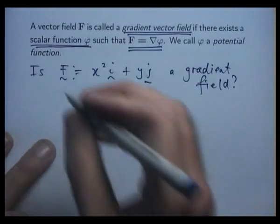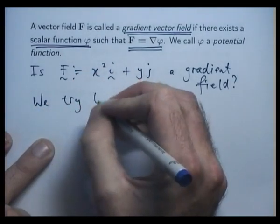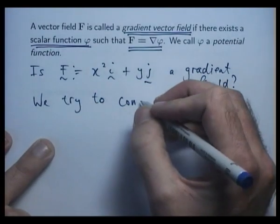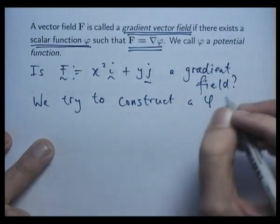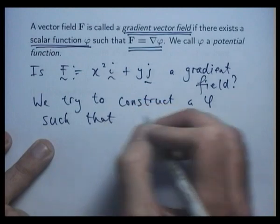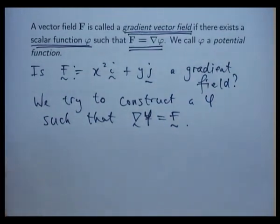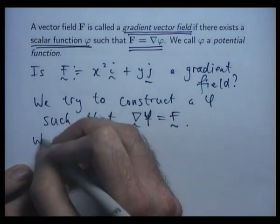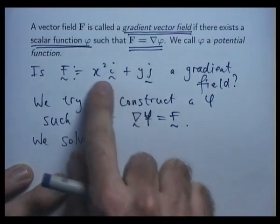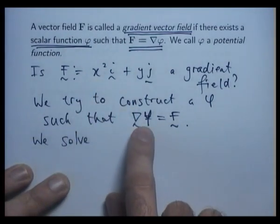So what we would like to do here is produce some scalar field phi such that grad phi equals the given vector field. We try to construct a function phi such that grad phi equals our vector field. So what we want to do here is solve d phi dx equals x squared, d phi dy equals y.